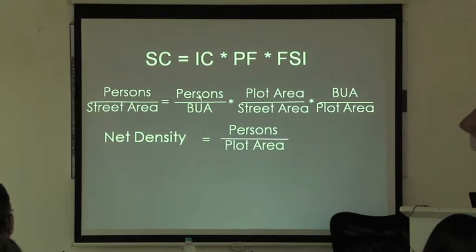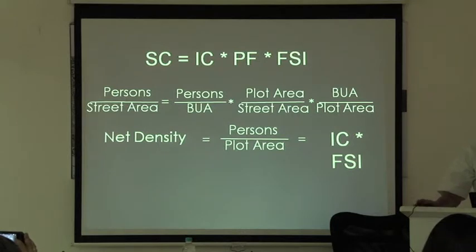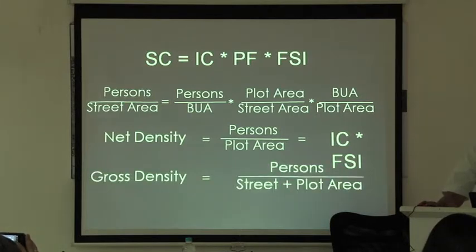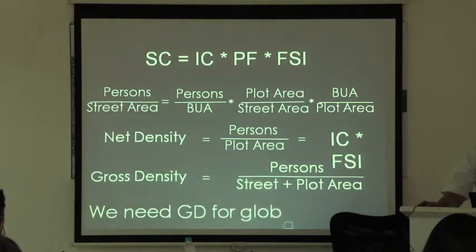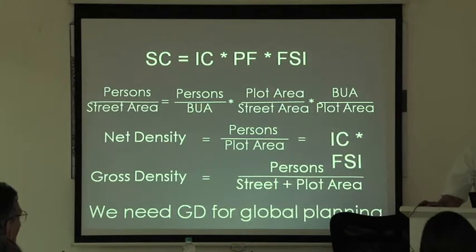Until now we have been using terms like net density, but this is not something that is easily grasped. I actually find street crowding and indoor crowding much easier to grasp than net density, which is internal crowding times FSI. And gross density is persons upon the street area plus the plot area. We do need gross density for global planning, but otherwise I think net density and gross density — widely used by planners in the past — are not as meaningful as street crowding and indoor crowding.